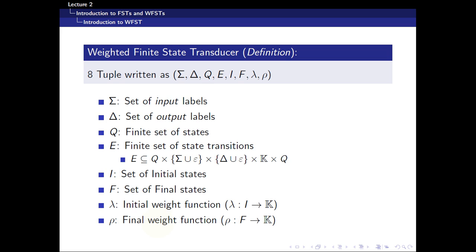So the more formal definition is that a weighted finite state transducer is an 8-tuple. The difference between a finite state transducer and a weighted one is that now it has extra two components of an initial weight function and a final weight function.